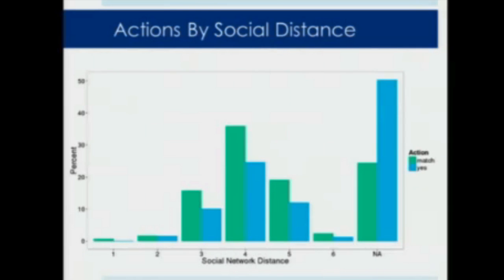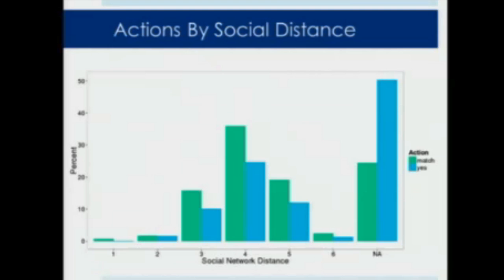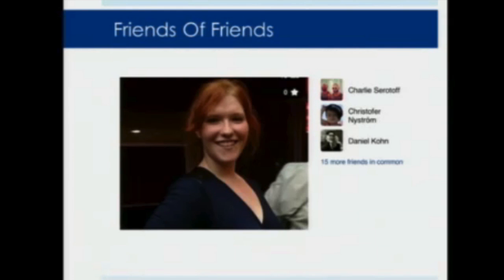This is a graph of the likelihood of people to match up based on their social distance. Blue is yeses that are sent but not reciprocated, whereas green is matches. About half of all yeses are not reciprocated when they're not in the social network. But of the matches, most fall within three steps — a Facebook friend, a friend of a friend, and so on. Most matches occur within about four steps of somebody, at least on our site. The way we serve these insights to a user is by highlighting who the friends in common are with the suggested user.